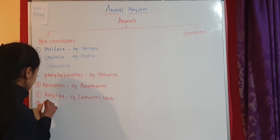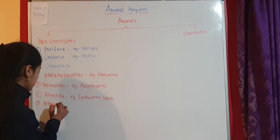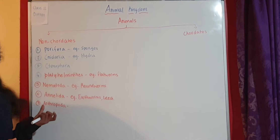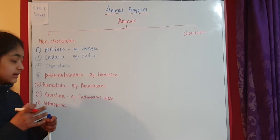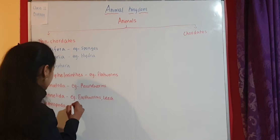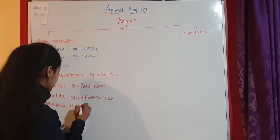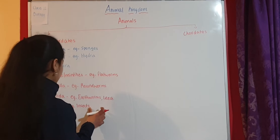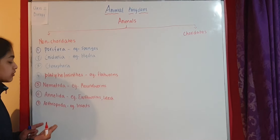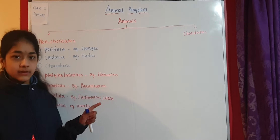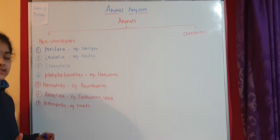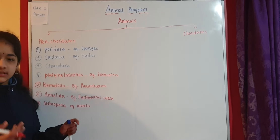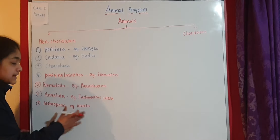The seventh phylum is called Arthropoda. This phylum includes animals which have jointed appendages. Arthropoda includes examples like insects — cockroaches and many others. Arthropoda is the largest phylum in the Animal Kingdom. Within Arthropoda there are many classes like Insecta and Chilopoda, and Insecta is the largest class in it.